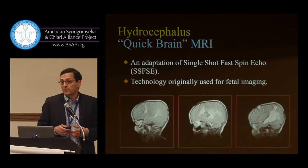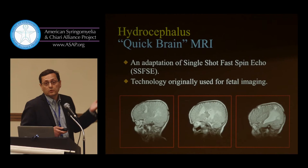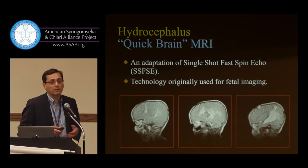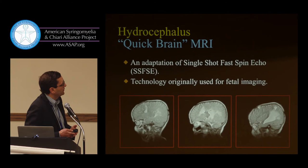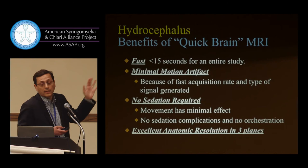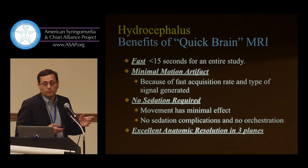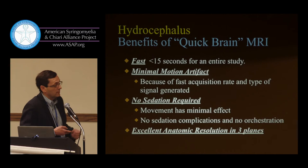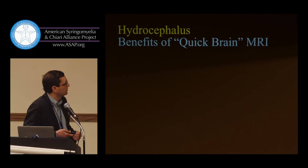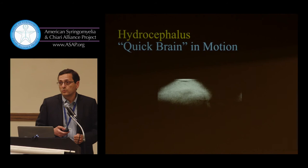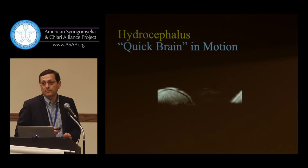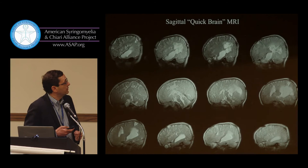We've adapted an MRI protocol we call 'quick brain MRI,' based on fetal imaging — the same technique used for fetal MRI because a pregnant woman can't be in the scanner for an hour. The advantage is that the whole scan takes 15 seconds or less, there's minimal motion artifact, no sedation is required, and it has pretty good anatomic resolution. Here is one of my patients moving in the scanner, and these are the images we got: sagittal, axial, coronal — the technologist just had to center the images, but there is no movement artifact.